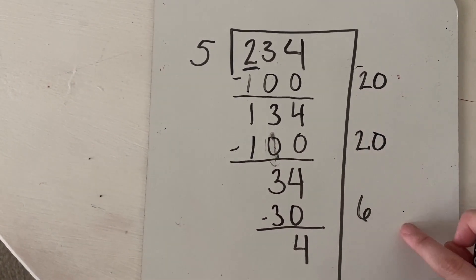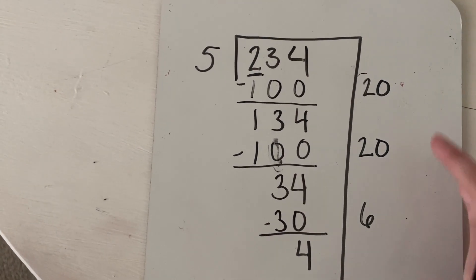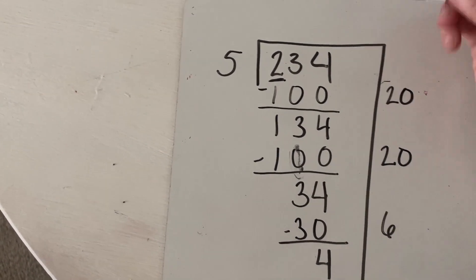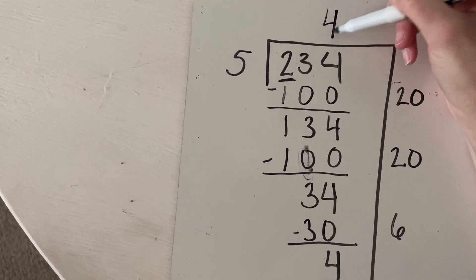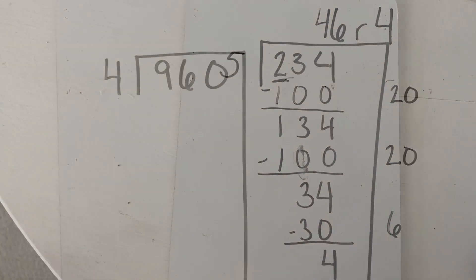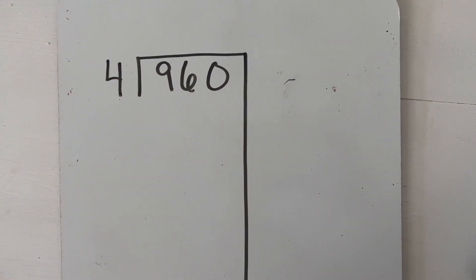Next thing I do is I add up my partial quotients from the side. So I had 20 plus 20 is 40 plus six is 46. So my answer would be 46 remainder four. Let's look at one more problem with that method.